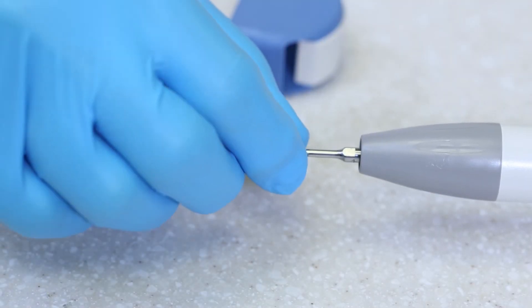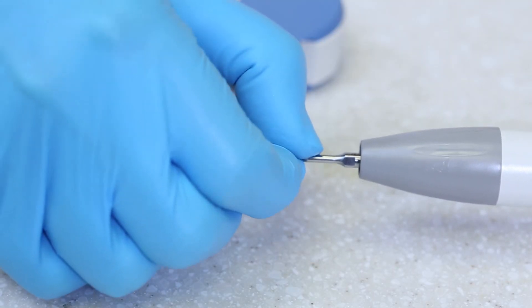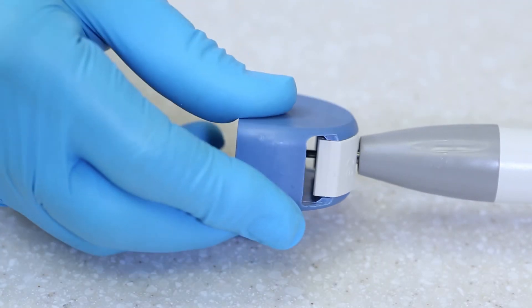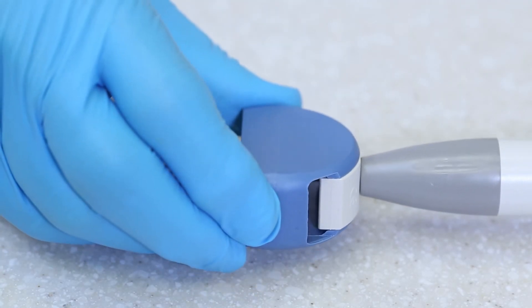If your ultrasonic tip is not vibrating, check to see if the tip is loose. If the tip is loose, tighten the tip with the tip wrench. If the tip is tight, check to see if your power setting is too low.